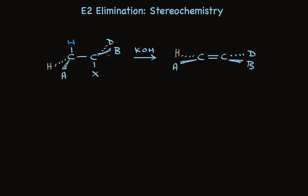A and B are across from each other. A and B start out pointing out toward us, and in the product they're pointing toward us. The tan H and D start out pointing back away from us, and they're pointing back away from us. So when we lose the blue hydrogen, we only make one stereoisomer.